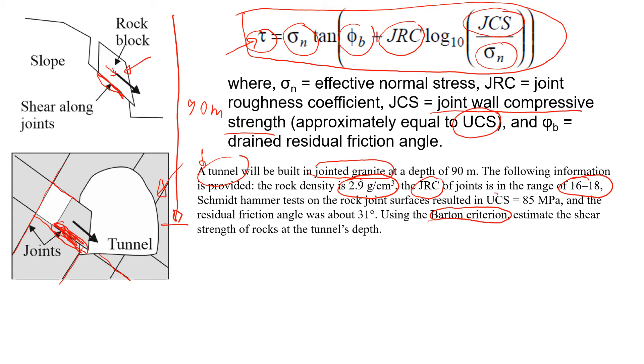They did Schmidt hammer test and they did some correlation, so they obtained this unconfined compressive strength of 85 MPa which looks reasonably high, but this is granite so that's probably a nice good value. And the residual friction angle is 31 degrees. So we need to estimate the shear strength of this jointed granite.